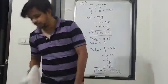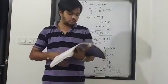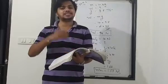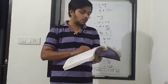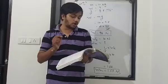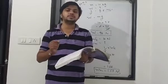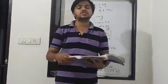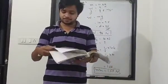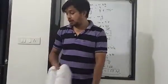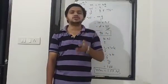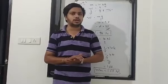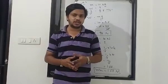Some other questions are given. The first question is the difference between mass and weight, which we have already seen. Another question is: why is the weight of an object on the moon 1/6 of the weight on earth? This is also given on page number 137. The weight on the moon is 1/6 of the weight on earth because the gravitational acceleration on the moon is very less compared to earth — it is one-sixth of earth's gravitational acceleration.